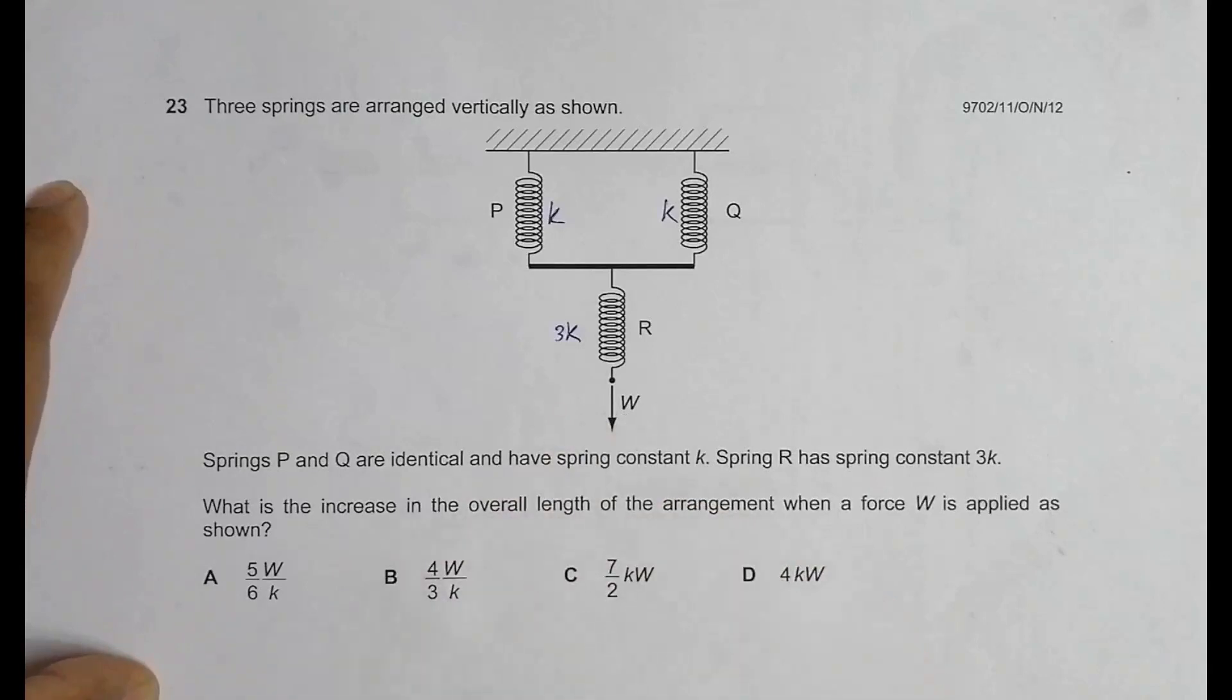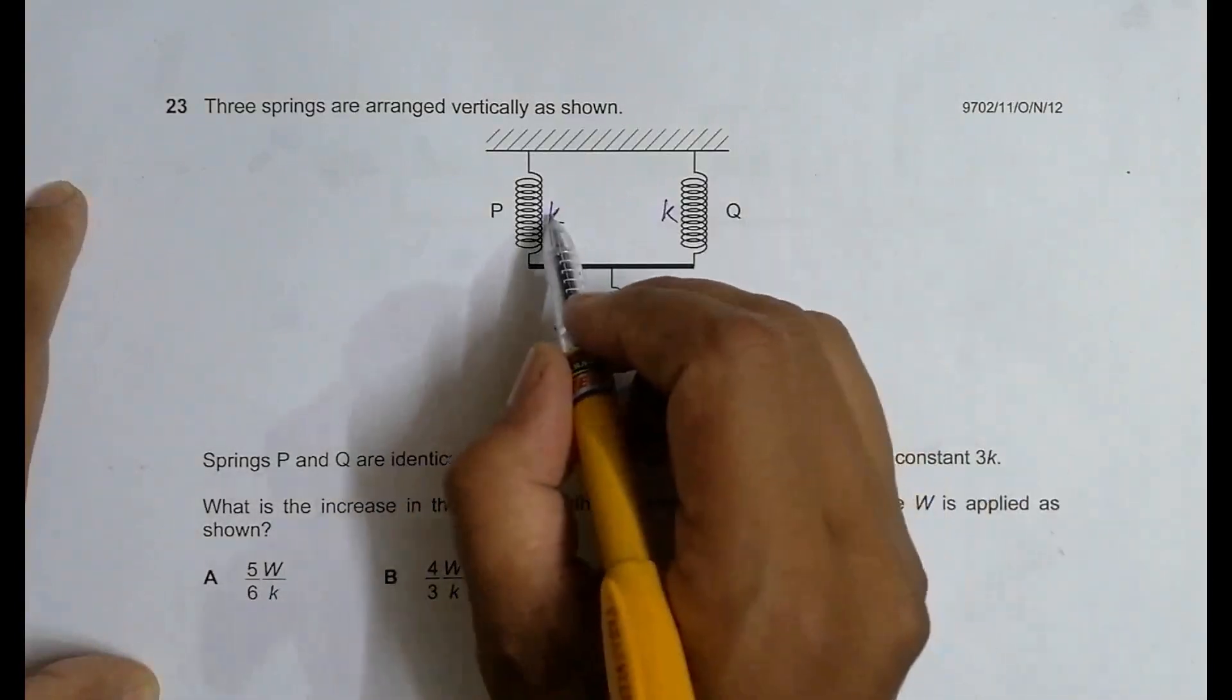So we have to find the overall constant K total and then we can go for the increase in length. This K and K is in parallel.